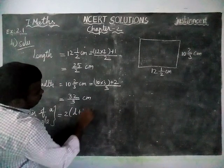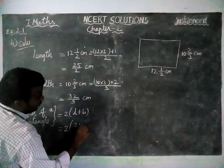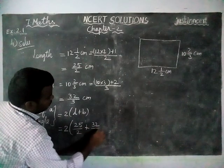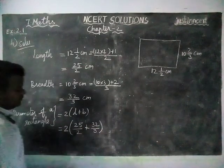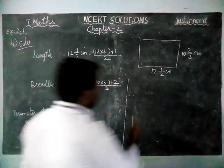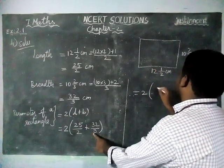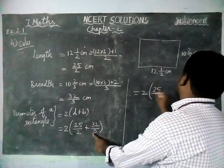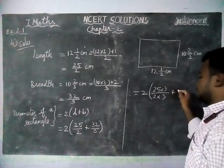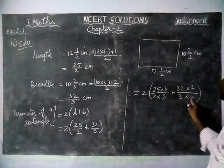Perimeter is equal to 2 into l plus b, is equal to 2 within bracket, l value is equal to 25 divided by 2 plus breadth is equal to 32 divided by 3. We have to find LCM, common denominator. This is equal to 2, within bracket, 25/2 into 3/3 plus 32/3 into 2/2.